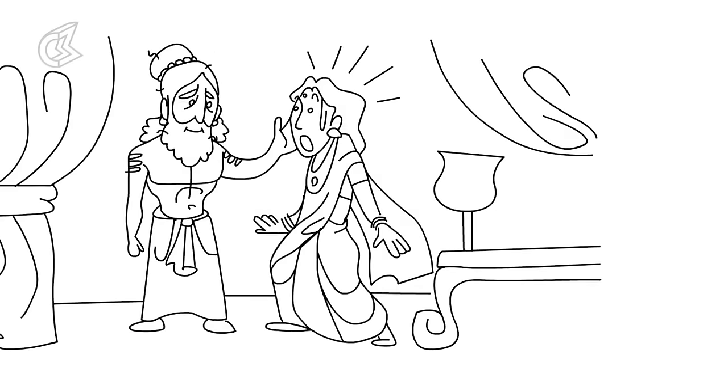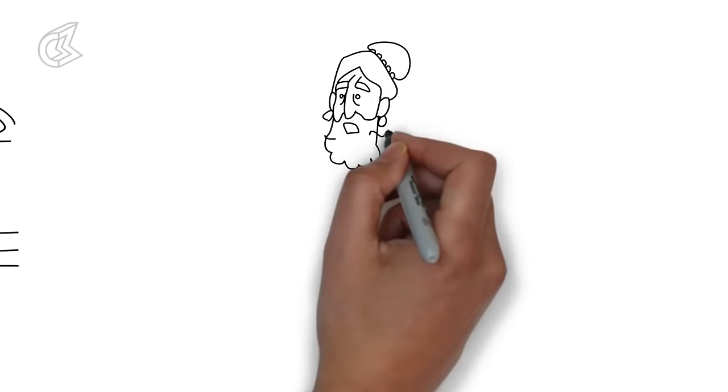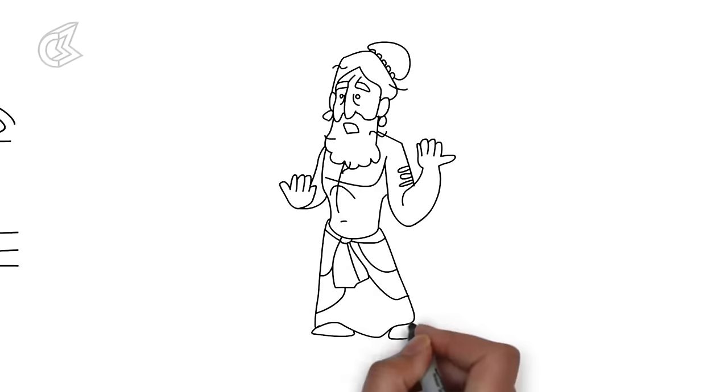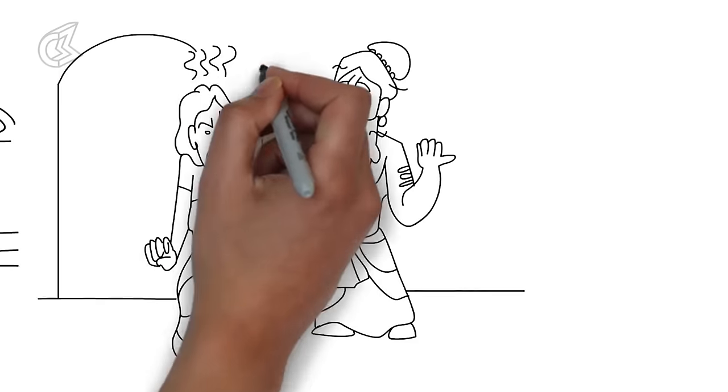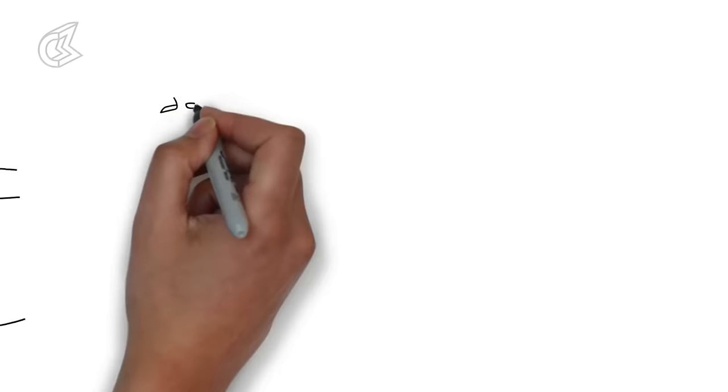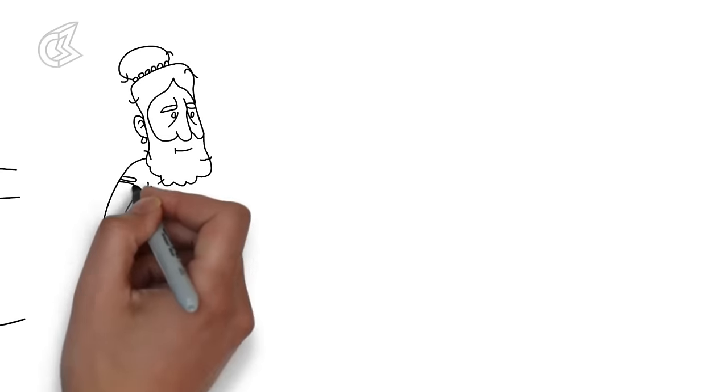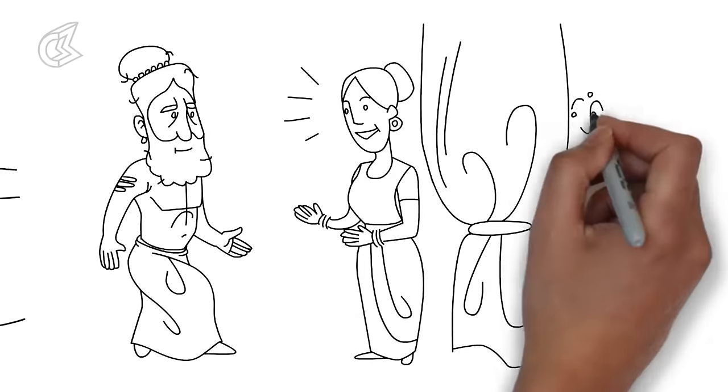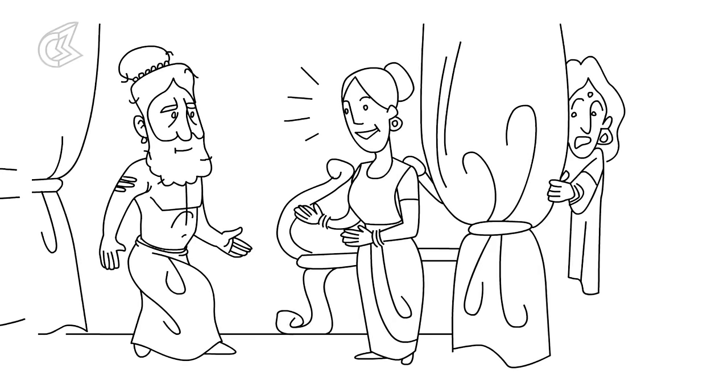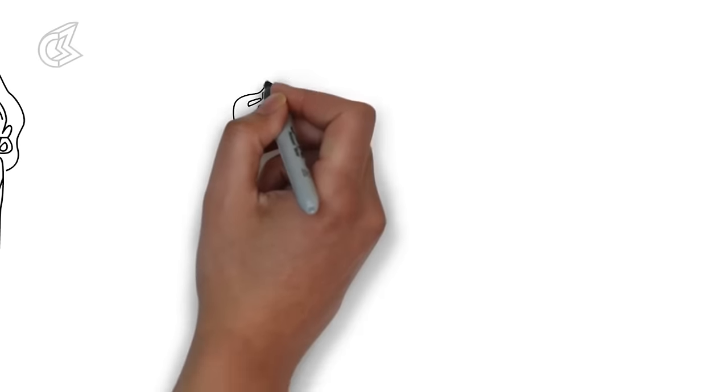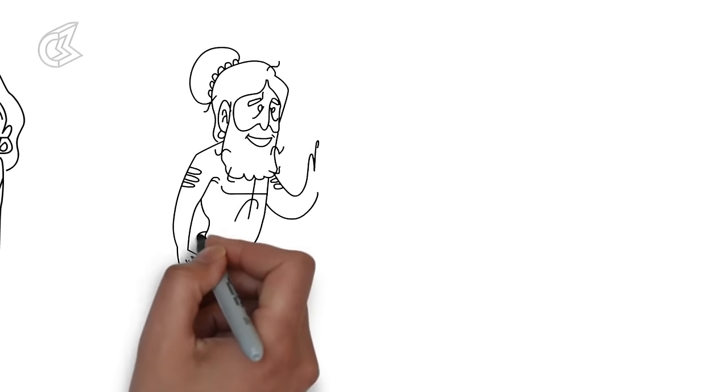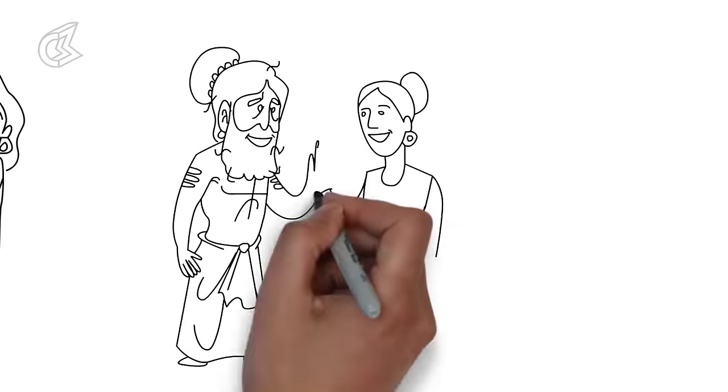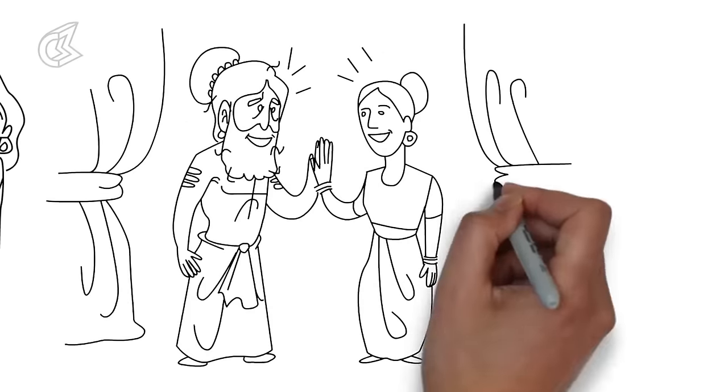Later, Vyas told Satyavati that her child would be born pale and will suffer bad health. Satyavati was furious. In her anger, she asked Vyas to pay Ambalika a second visit. But when Vyas did so, the frightened Ambalika sent in her place a servant girl. When the servant girl faced Vyas, there was no fear in her eyes or her heart. She accepted the ugly-looking, porous-dwelling sage with love.